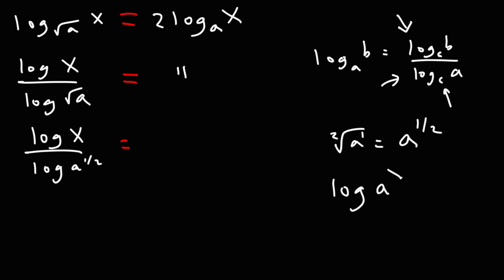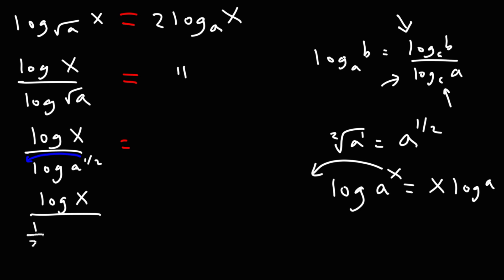Now log a raised to the x is equal to x log a — that's another property of logs. You can move the exponent to the front. So I'm going to take the 1/2 exponent and move it to the front, giving us log x over 1/2 log a.